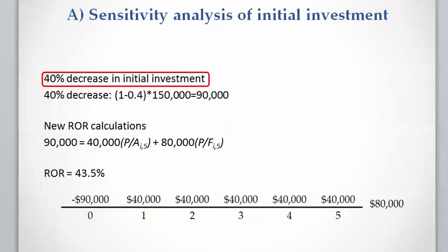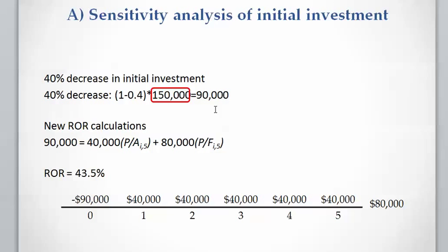First, sensitivity analysis of initial investment. We want to see what the rate of return would be if we decrease the initial investment by 40%, meaning we multiply $150,000 by 1 minus 40%, giving $90,000. We calculate the rate of return for this new situation using the equation: present value of costs equals present value of income plus present value of salvage. The rate of return is 43.5%.